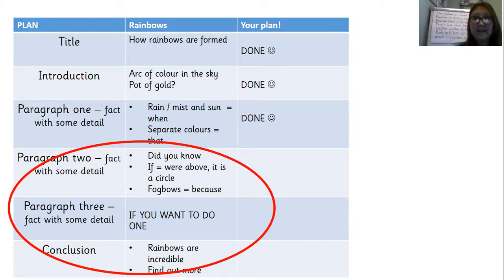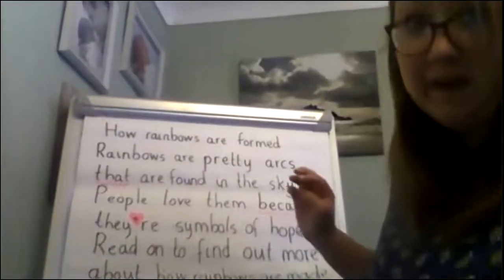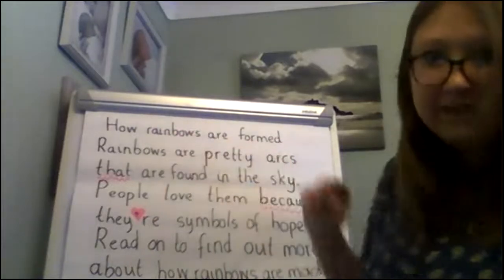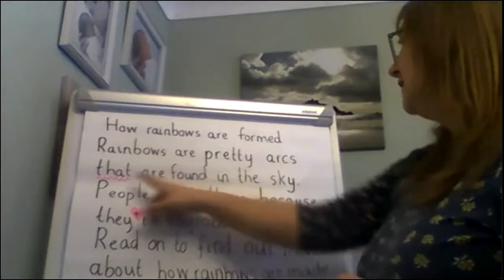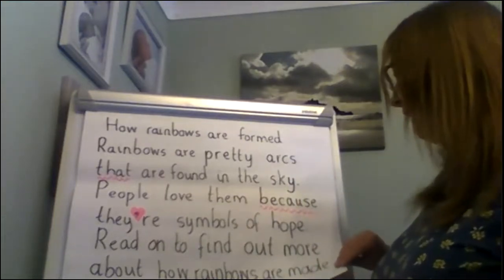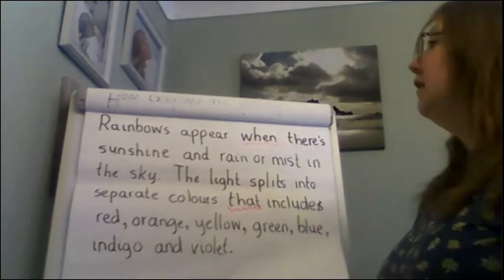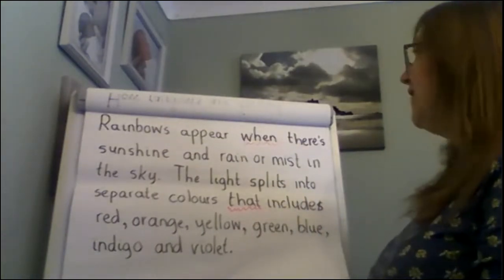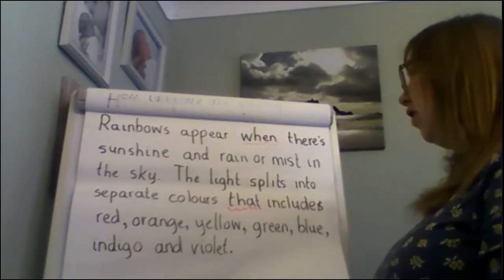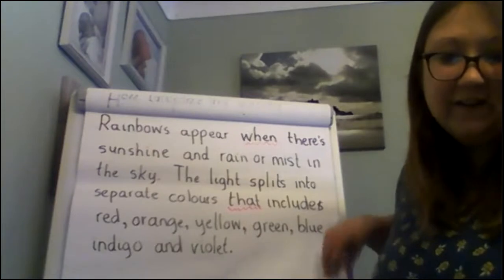It's really important that we read our work back. So I'm going to read what we wrote yesterday. 'How rainbows are formed' — that was my title at the top. 'Rainbows are pretty arcs that are found in the sky. People love them because they're symbols of hope. Read on to find out more about how rainbows are made.' And this was my first paragraph: 'Rainbows appear when there's sunshine and rain or mist in the sky. The light splits into separate colours that include red, orange, yellow, green, blue, indigo, and violet.' Now I need to miss a line before we start our next paragraph.